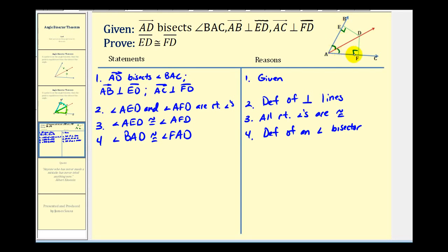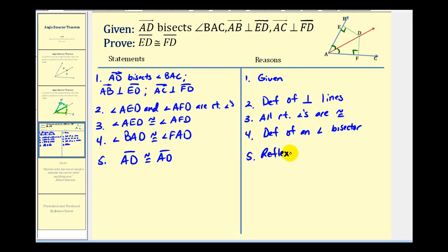So we have angle-angle in both of these two triangles. Now to get the side, notice how both triangles share side AD, and in both cases it is the hypotenuse of the right triangle. So for step five, we can say that segment AD is congruent to segment AD, by the reflexive property. So this side is congruent to itself.